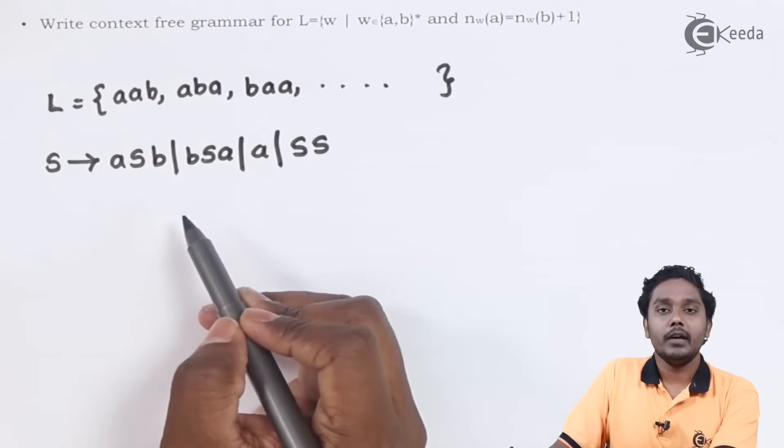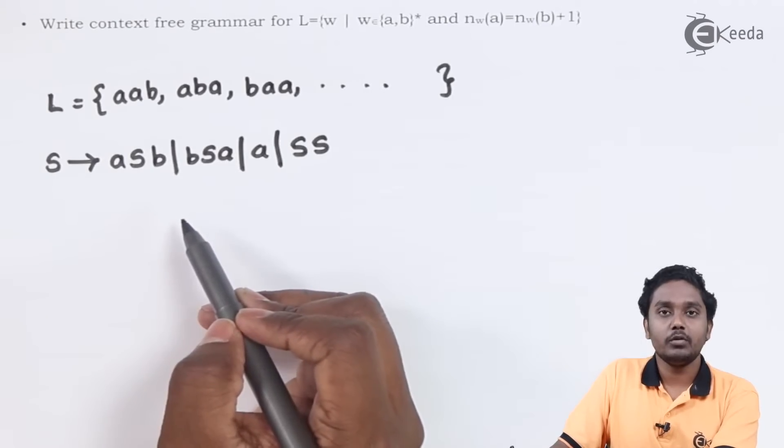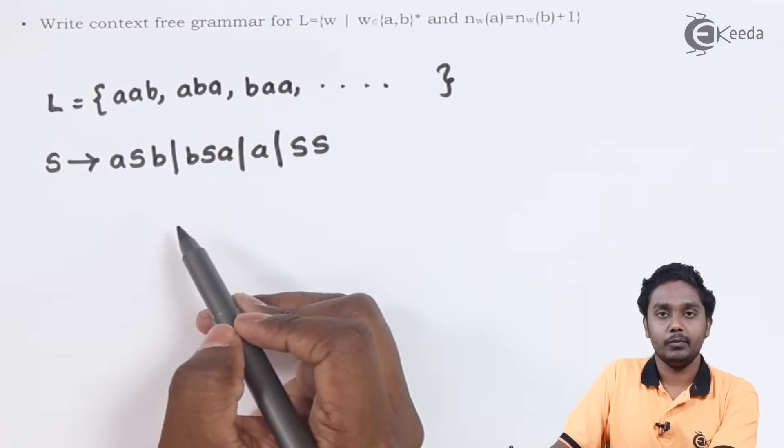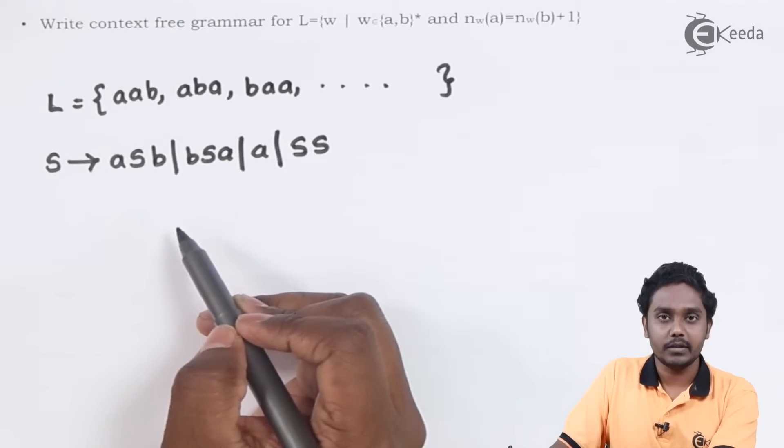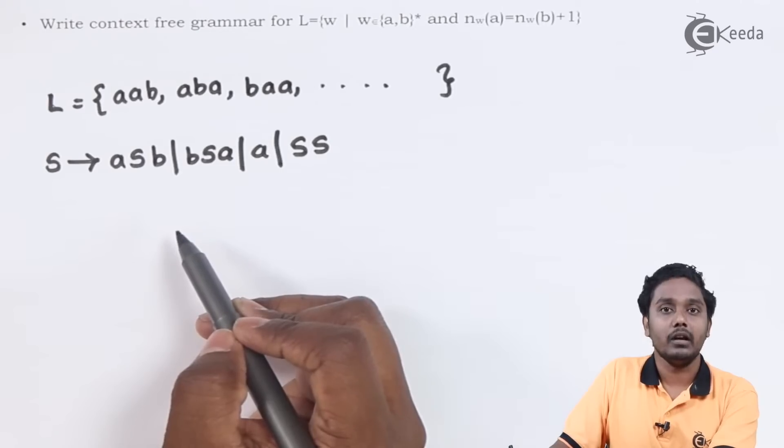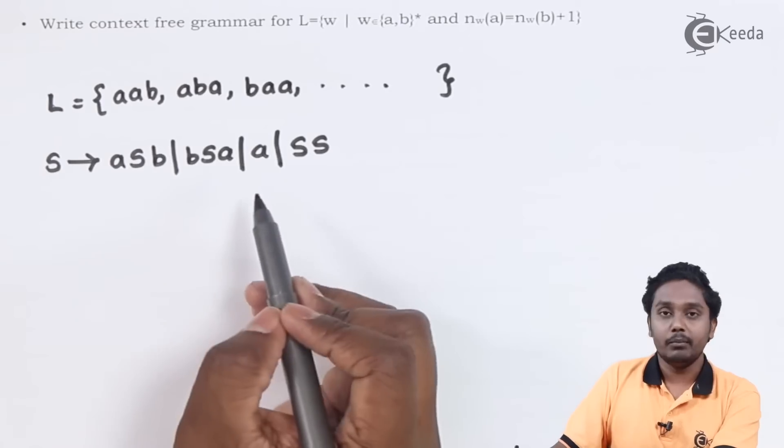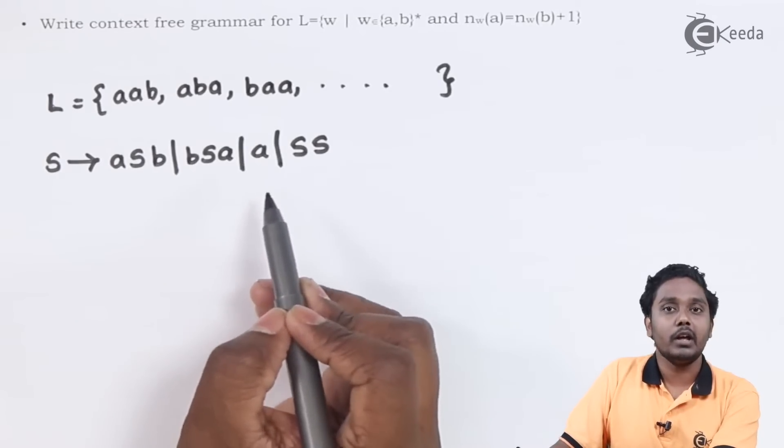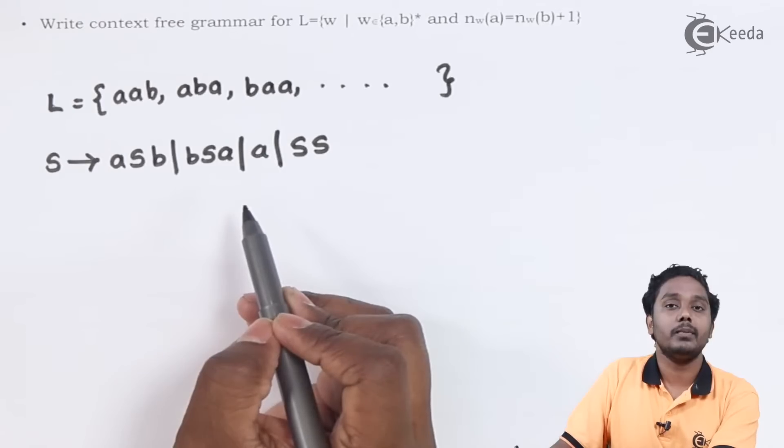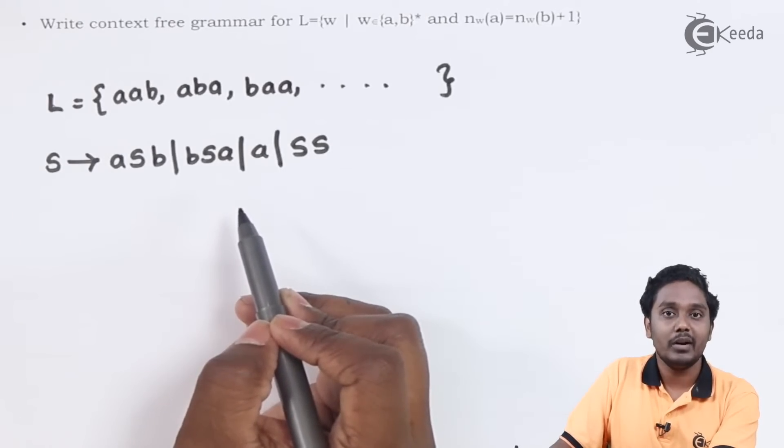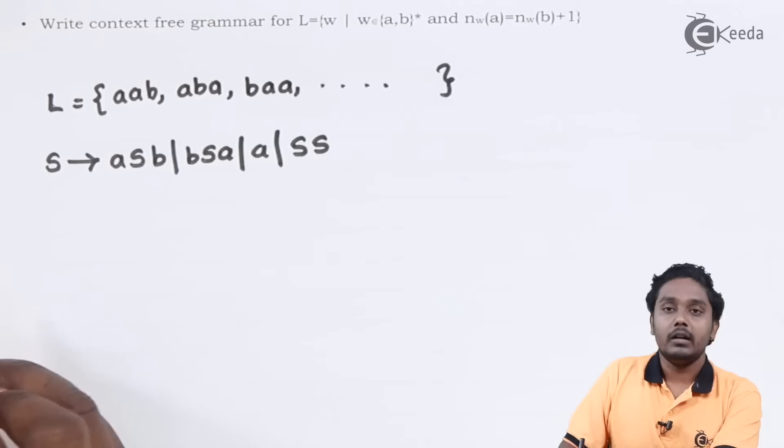You can see that the grammar we have constructed now is much similar to the grammar we have constructed earlier. We have replaced the elimination with epsilon by A. Because now, at the end of the derivation, everywhere we will be replacing one extra A, which will make sure that the number of A's is one more compared to the number of B's.